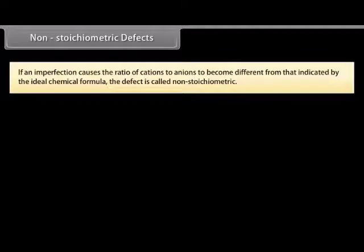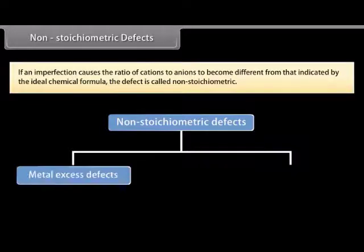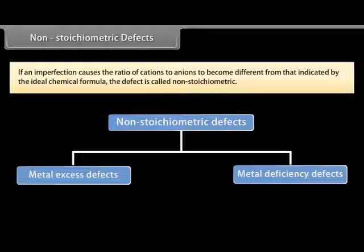Non-stoichiometric defects: if an imperfection causes the ratio of cations to anions to become different from that indicated by the ideal chemical formula, the defect is called non-stoichiometric. These are of two types: metal excess and metal deficiency.